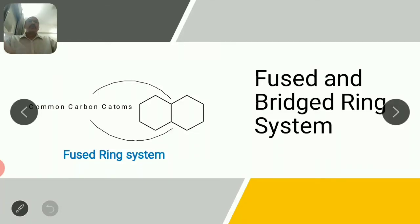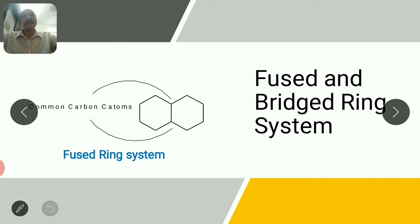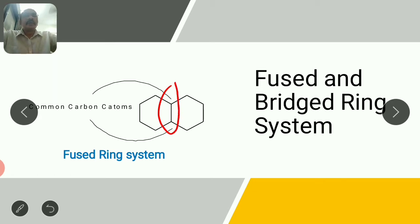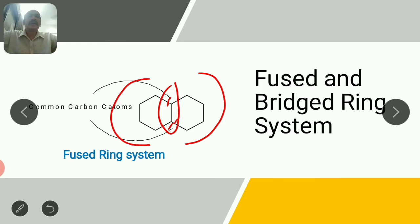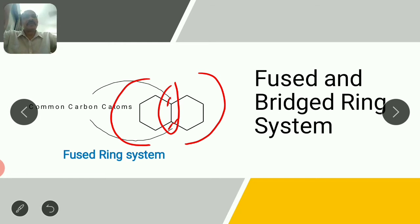First you have to understand what are fused and bridge ring compounds. Here the example given is a bicyclic ring compound. These two carbon atoms are common carbon atoms. If you have to classify it for nomenclature, you have to see three things: how many carbons are common. Here two are the common carbon atoms, so it comes as a fused ring system. For a fused ring system, two carbon atoms are common carbons.